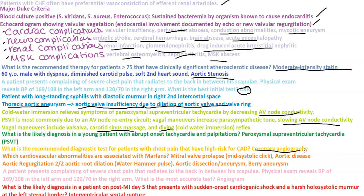Cardiovascular abnormalities associated with Marfan syndrome include mitral valve prolapse — you'll hear a mid-systolic click followed by a late systolic murmur — aortic disease including aortic regurgitation secondary to aortic root dilation, aortic dissection, aneurysm, and berry aneurysm.